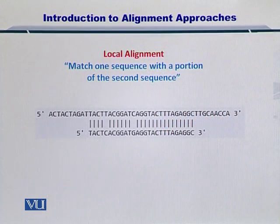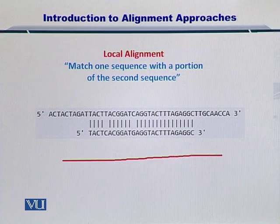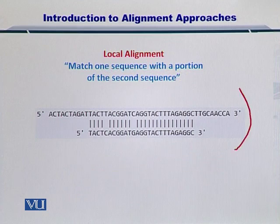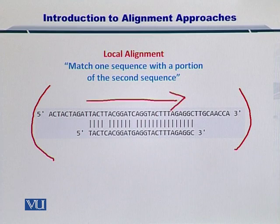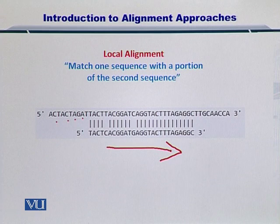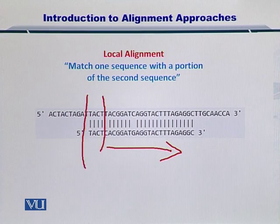Let's start with local alignment. Local alignment essentially focuses on matching one sequence with a portion of the second sequence. I have given you an example here where you have a five prime to three prime DNA sequence on top and another five prime to three prime sequence on the bottom. What has happened is I have slid this sequence along and found that these four nucleotides are matching exactly — TACT matches with TACT.